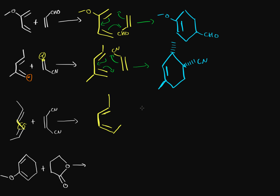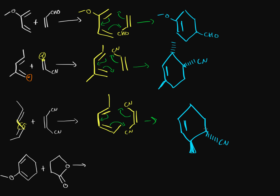Then we have our dienophile, which is the one with the two cyanide groups. We're going to make the cyanide groups face inwards based on the endo rule, and we form our new sigma bonds and pi bond as normal — a sigma bond here, a sigma bond here, and the pi bond goes back here. Our final product is going to be stereospecific. We get our cycloalkene with the double bond. The methyl group is pointing inwards so it's going to be going up. The cyanide groups are pointing inwards because of the endo rule so they're pointing downwards. The other methyl group is pointing out, so it's going to be a dash.